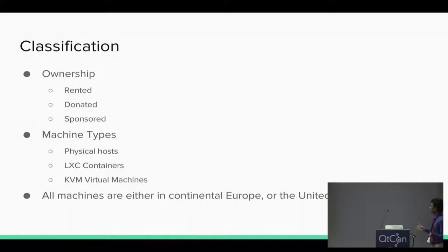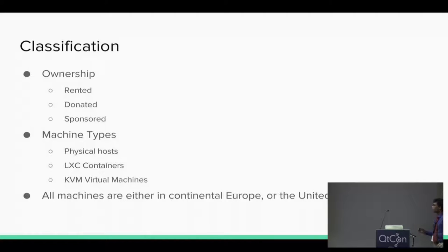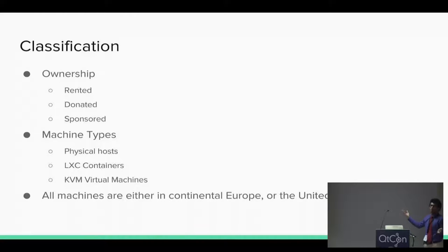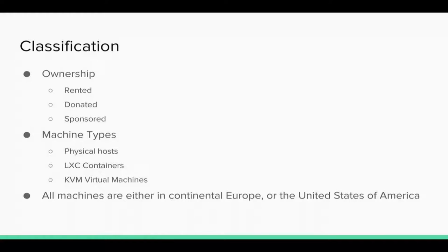We also have some completely sponsored servers — private individuals donate capacity on their personal servers, or companies donate server space or actual KVM machines. Most of the machines we rent or are donated are powerful machines that run as physical hosts for LXC containers. We split them into smaller containers with LXC, and we also use KVM virtual machines. All machines are currently either in continental Europe or the United States, which is something we need to change — there's not enough geographical spread.